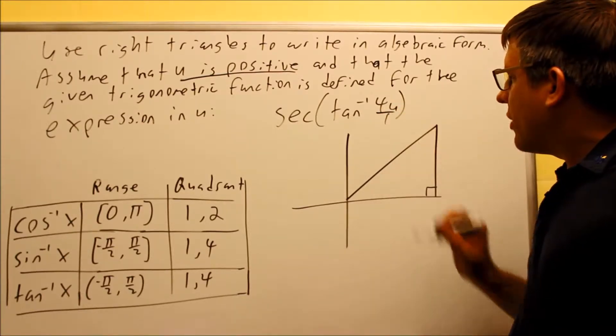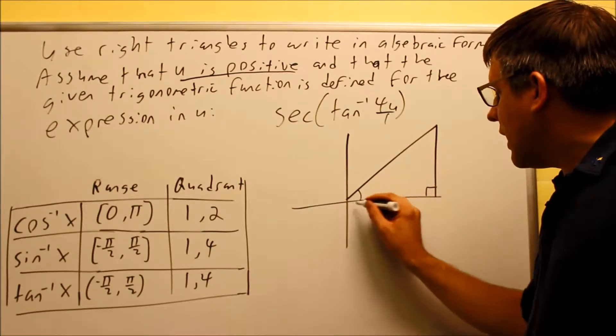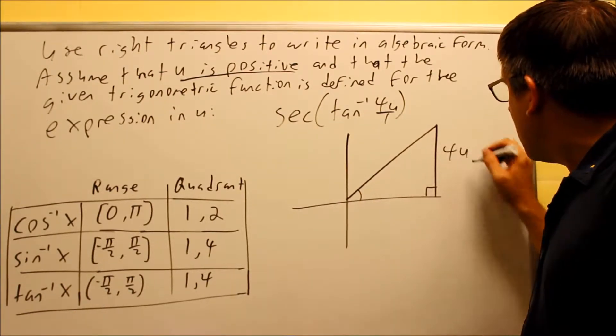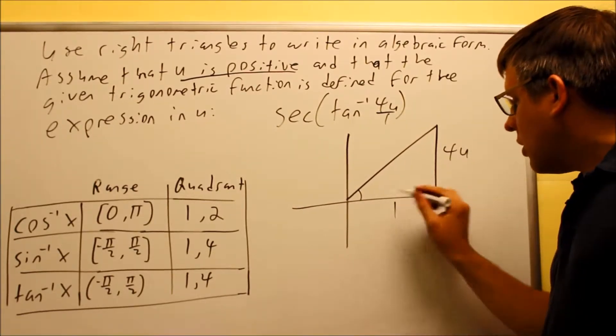We're going to write that as 4U divided by one. That angle is measured from this x-axis here. Across from that, that's going to be our opposite, that's 4U. Down here, it's going to be a one.